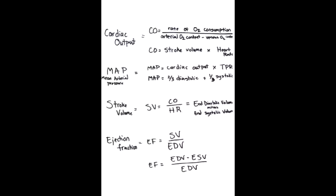What is the equation of stroke volume? The equation of stroke volume is cardiac output over heart rate. This can also be expressed as end-diastolic volume minus end-systolic volume. What is the equation of